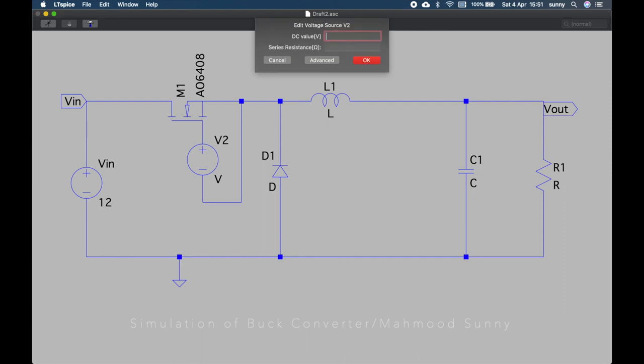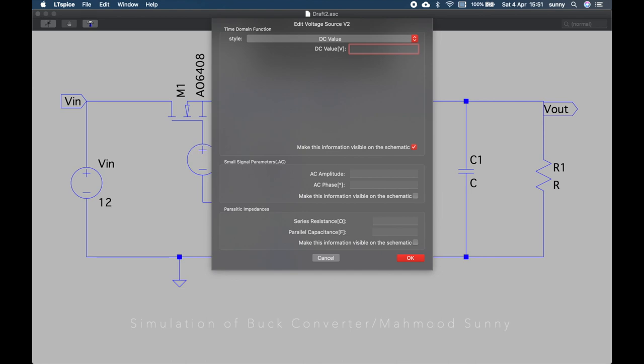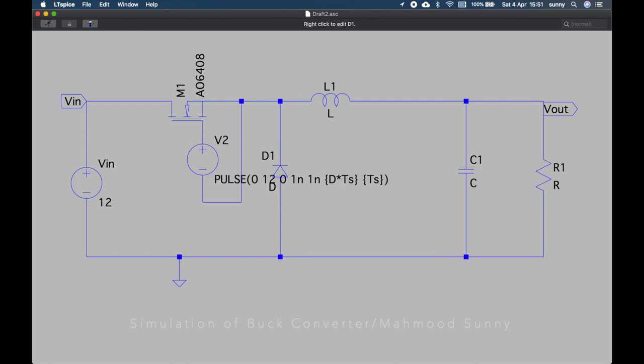Let's configure our pulse generator. We need to go to the advanced tab. Then choose the pulse option. Then initial voltage 0, on voltage 12V, delay 0. Then rising time 1 nanosecond, falling time also 1 nanosecond. Then T ON. We can define it as a parameter. Our duty ratio, let's say it's D multiplied by the time period, the switching time period, TS. Then again time period, this TS.